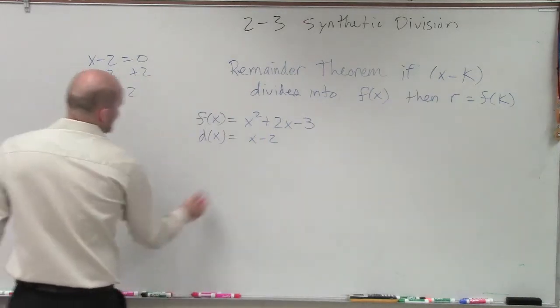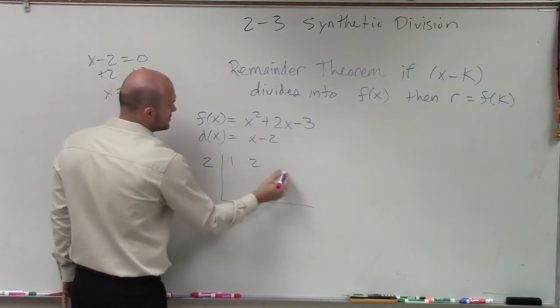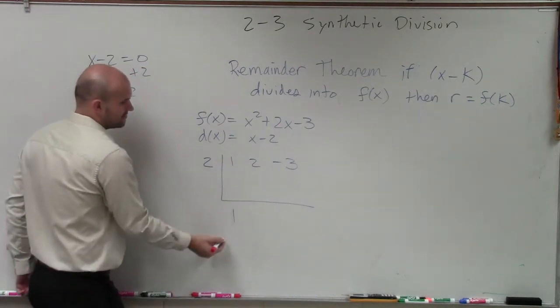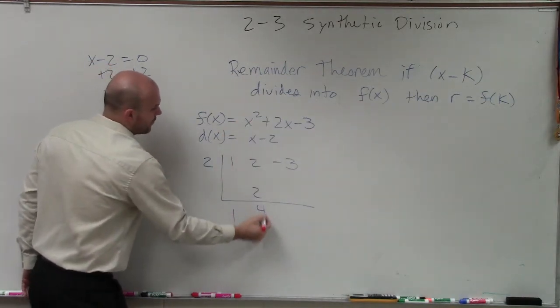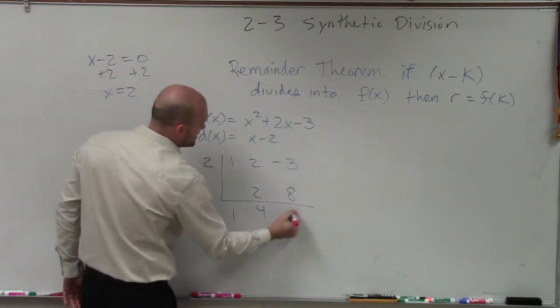So now you take 2, write it down, and then you take now your exponent. So you have 1, 2, negative 3. First number you bring down, just to take the coefficients. 1 times 2 is 2, 2 plus 2 is 4. 4 times 2 is 8, negative 3 plus 8 is going to be a positive 5.